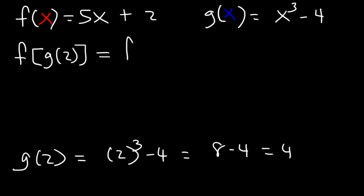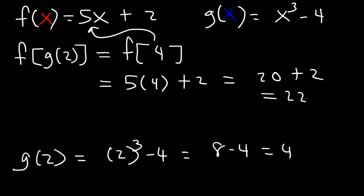So f of g of 2 is equivalent to f of 4. Now we can take 4 and plug it into that equation. So it's 5 times 4 plus 2. 5 times 4 is 20. 20 plus 2 is 22. So that's how you can find the value of f of g of 2.